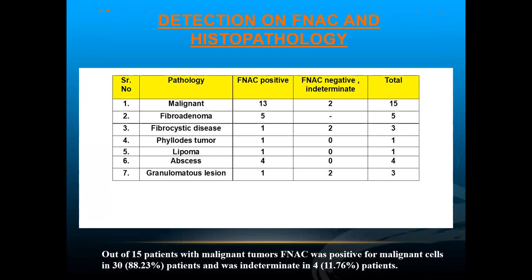Regarding FNAC and histopathology findings: 13 out of 15 malignant patients were confirmed on FNAC, while 2 were indeterminate or negative. Fibroadenomas were confirmed on FNAC in 5 out of 5 patients. For fibrocystic disease, FNAC was consistent in 1 patient and negative in 2 patients. Abscesses and lipomas were also detected on FNAC.